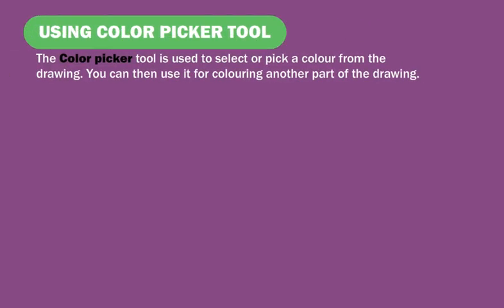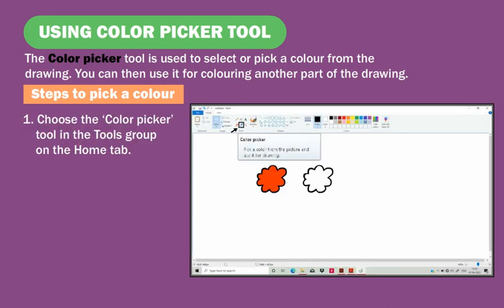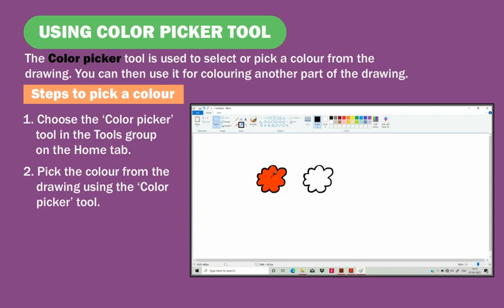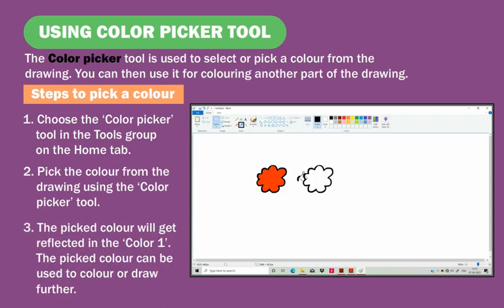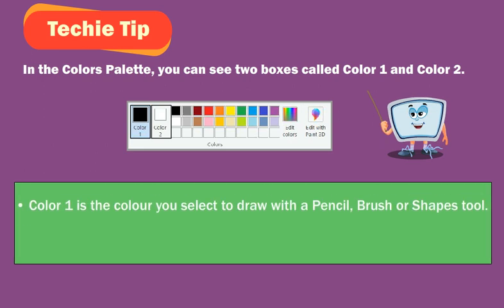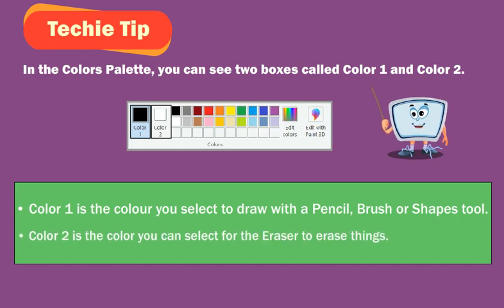The color picker tool is used to select or pick a color from the drawing. You can then use it for coloring another part of the drawing. Steps to pick a color: choose the color picker tool in the tools group on the home tab, then pick the color from the drawing. The picked color will be reflected in Color 1 and can be used to draw further. In the colors palette, Color 1 is the color you select to draw with a pencil, brush, or shapes tool. Color 2 is the color you can select for the eraser to erase things.